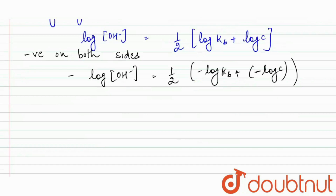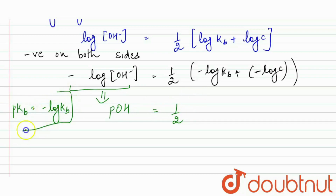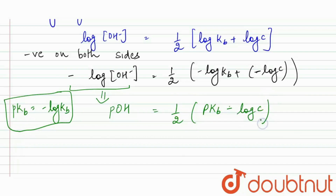This gives us POH on the left side. We know that minus log KB equals PKB. So the formula becomes: POH = one half times (PKB minus log C).